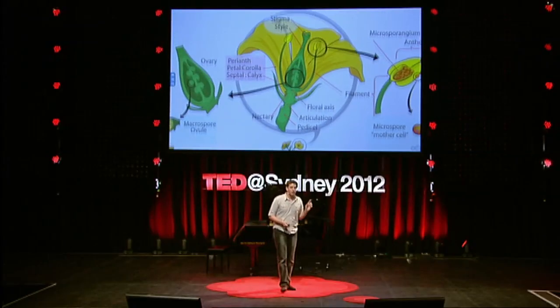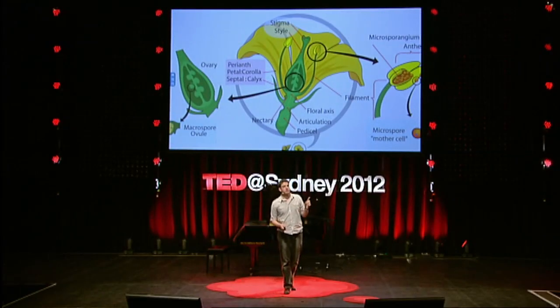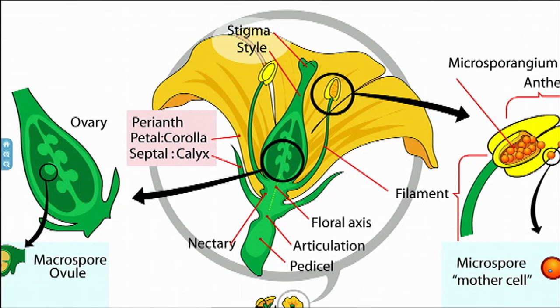Now I'm going to limit just to angiosperms, which is the fancy way of saying plants with flowers. So we've got a plant with a flower up here, and some of you may know that all of the sexual organs of the flowering plants are located inside the flower.